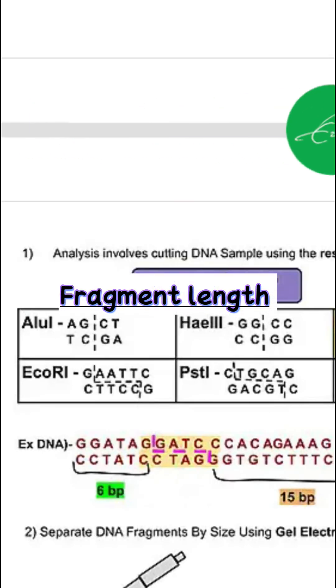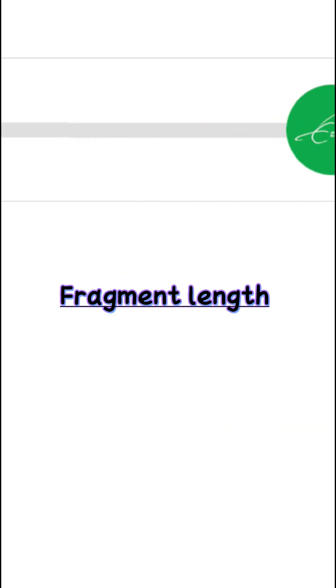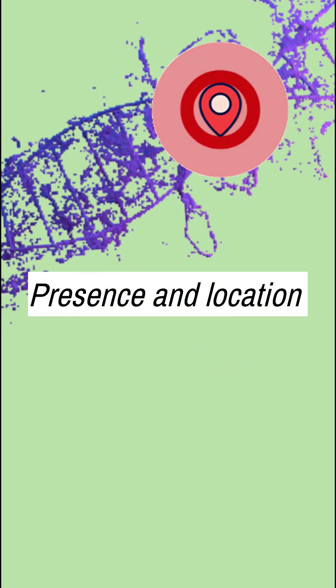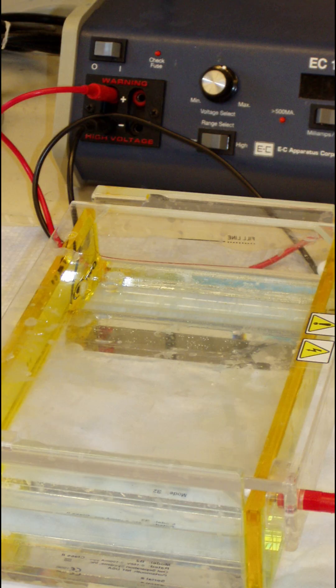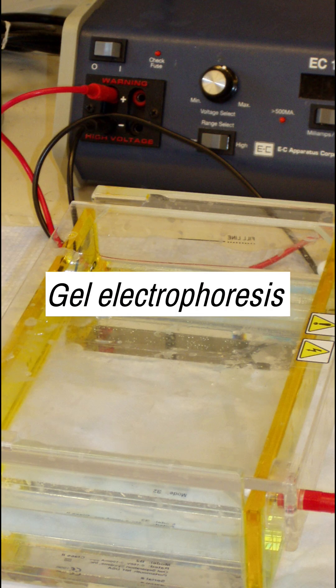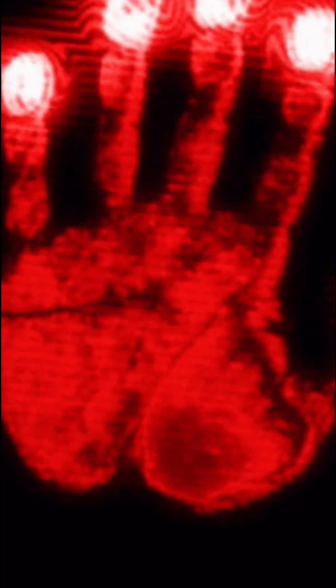When DNA is digested with restriction enzymes, the resulting fragments will have different lengths depending on the presence and location of polymorphisms. These fragments can be separated by gel electrophoresis, creating a fingerprint of the DNA based on fragment size.